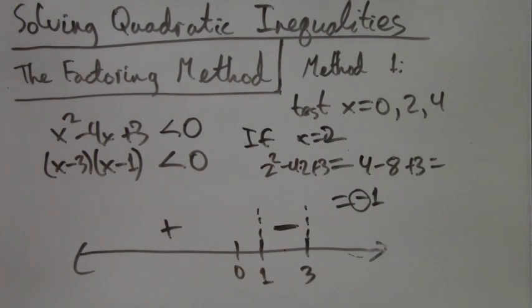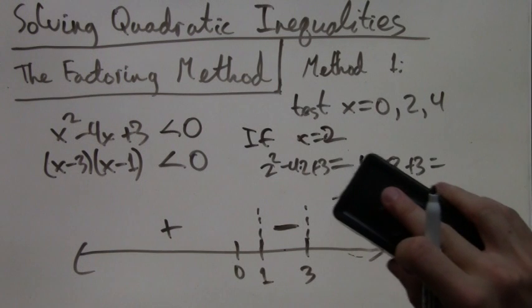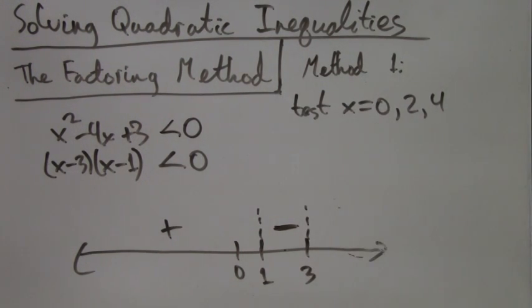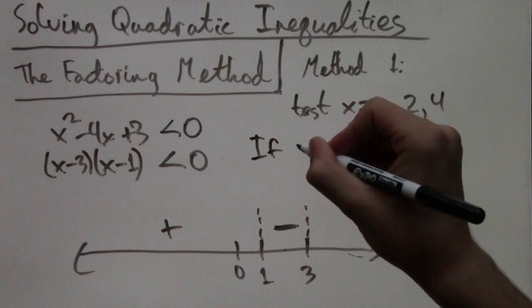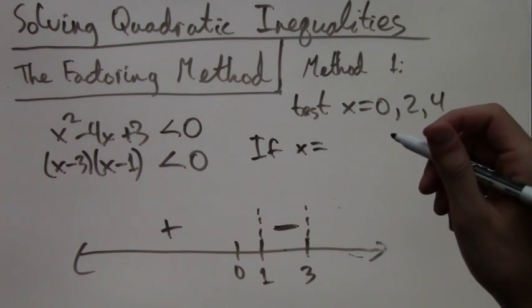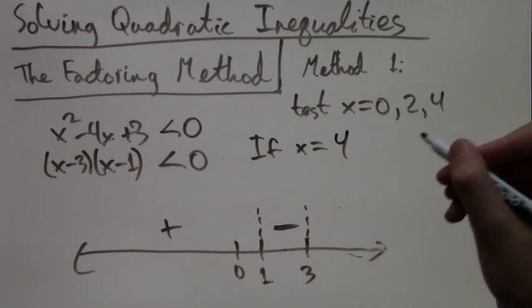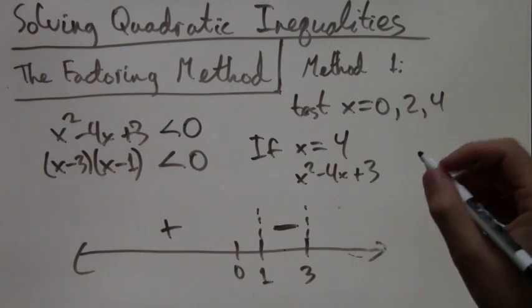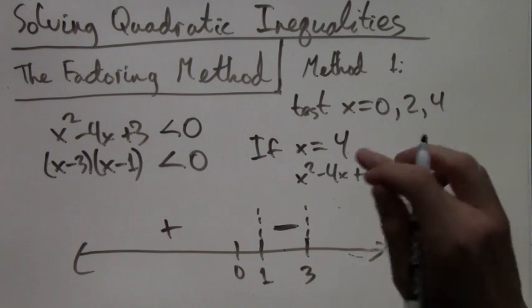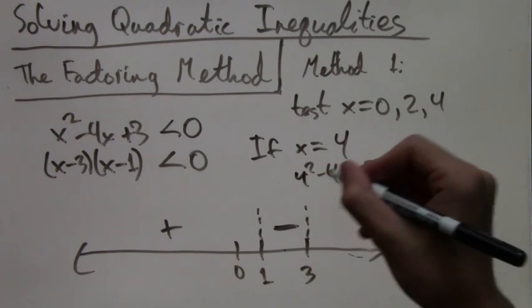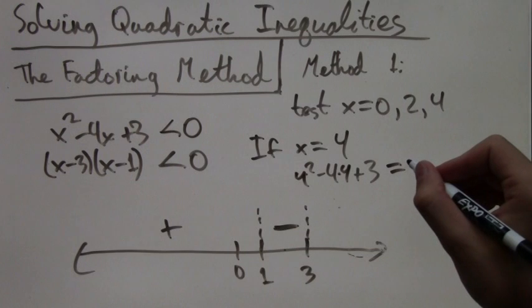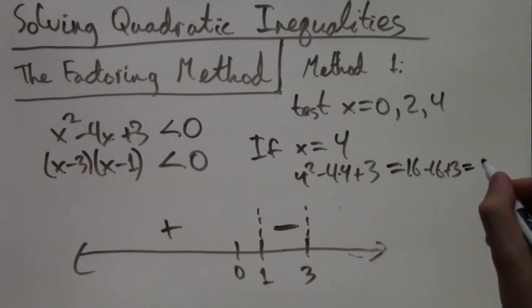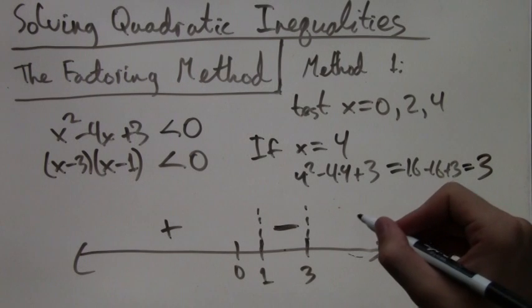The dotted lines are just for clarity. Now we just test one more point. This point will be to the right of the roots. It will tell us the sign of the interval to the right of the roots. When we plug in 4 to x squared minus 4x plus 3, we get 4 squared minus 4 times 4 plus 3, which is 16 minus 16 plus 3, which is 3, a positive number. So we put a plus.